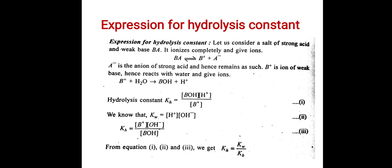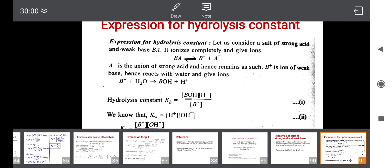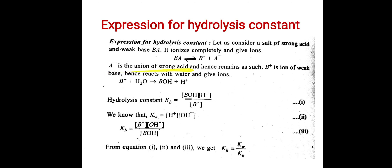Now we have to derive an expression for the hydrolysis constant, which is denoted by KH. For this we consider a salt of strong acid and weak base, say BA. BA ionizes completely to give ions: BA gives B⁺ and A⁻. Now A⁻ is the anion of a strong acid and hence remains as such, while B⁺ is the ion of a weak base and hence reacts with water to give ions.